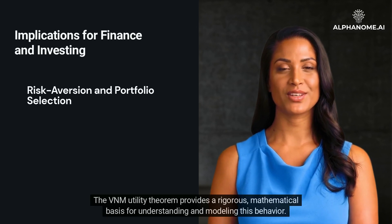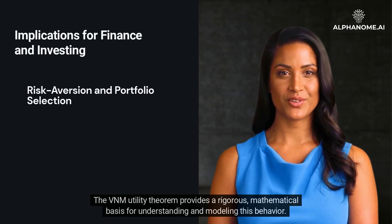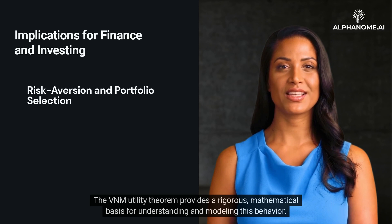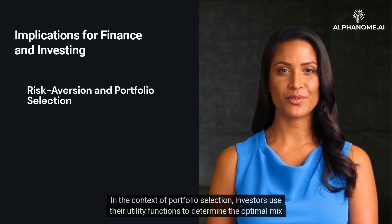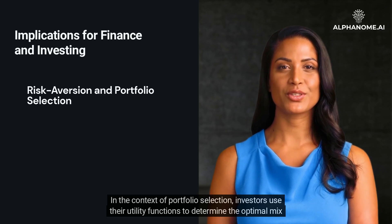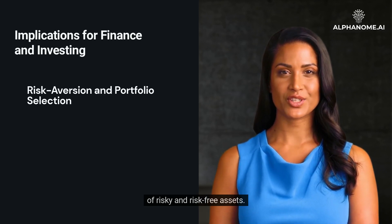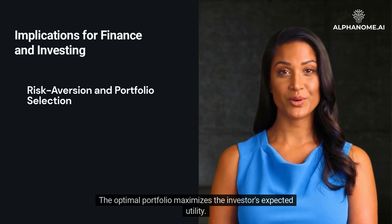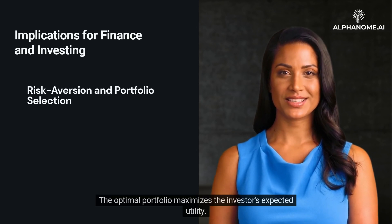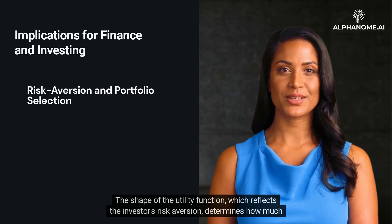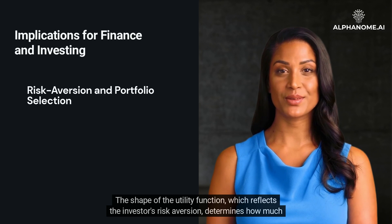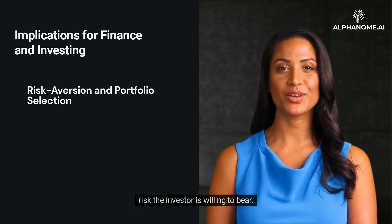The VNM Utility Theorem provides a rigorous mathematical basis for understanding and modeling risk aversion. In the context of portfolio selection, investors use their utility functions to determine the optimal mix of risky and risk-free assets. The optimal portfolio maximizes the investor's expected utility, and the shape of the utility function — which reflects the investor's risk aversion — determines how much risk the investor is willing to bear.